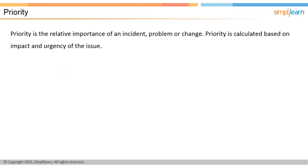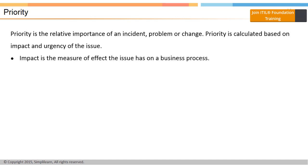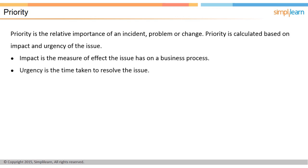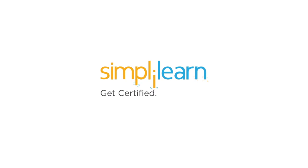In the next screen, we will discuss the priority of an event and how it is calculated. Priority means the relative importance of an incident, problem, or change. It is used to identify required times for action — for example, the service level agreement, or SLA, may state that priority-two incidents must be resolved within 12 hours. Priority is calculated based on the impact and urgency of the issue. Impact is the measure of the effect the issue has on the business processes or IT service support. Urgency is how soon the issue needs to be handled. Priority equals impact plus urgency.